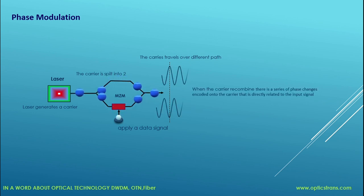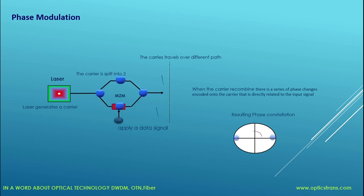When the two parts of the light are recombined, there's a series of phase changes encoded onto the light that is directly related to the input signal. On the receiver side, this shows how the phase constellation of generic BPSK in a clock cycle looks. If a phase symbol exists on the left of the constellation, the receiver interprets this as a one. If the symbol exists on the right, the receiver interprets this bit as zero.